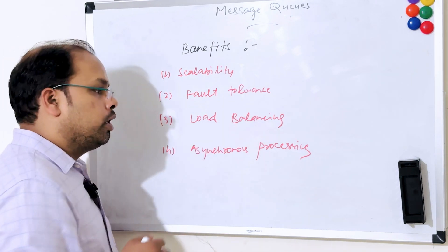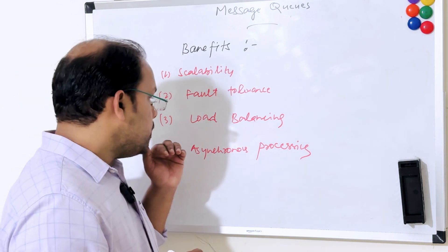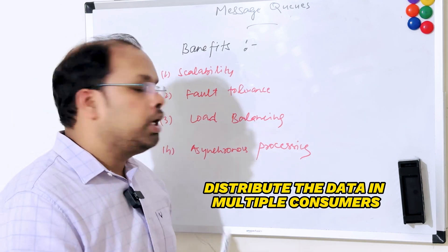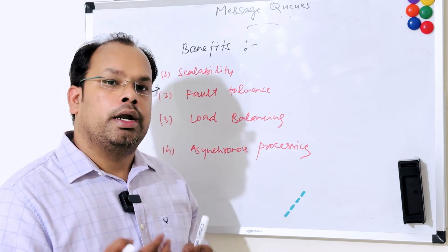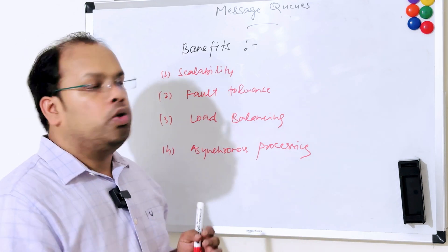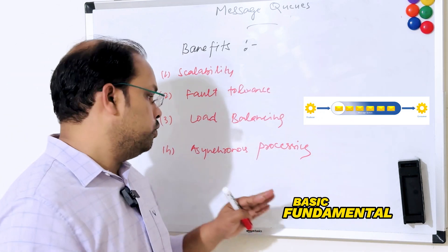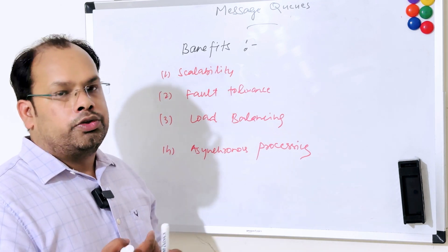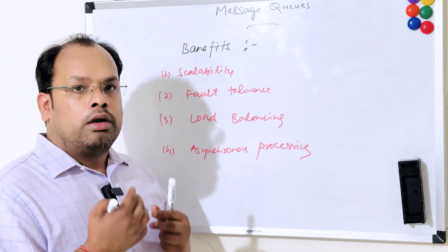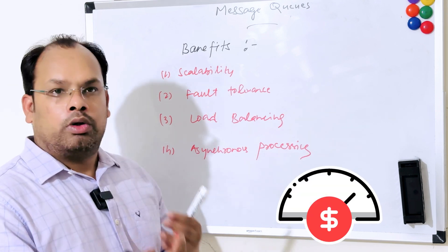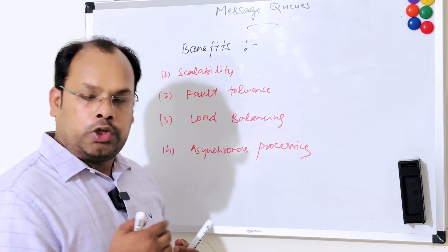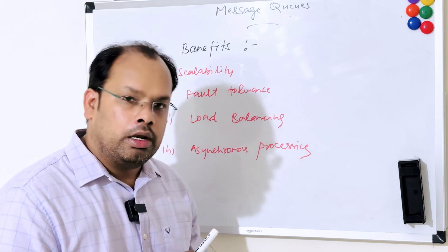Third is load balancing — the system can distribute data across multiple consumers, which increases performance and scalability. The last benefit is asynchronous processing — since asynchronous processing is fundamental to message queues, the consumer and producer both work independently, and overall it provides good performance and a good user experience in real time. That's all for this video — happy learning, thank you.